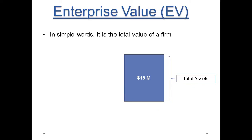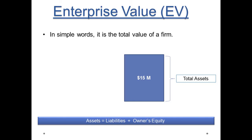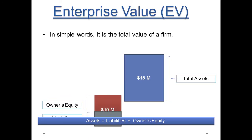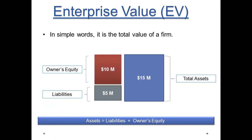We know a simple accounting equation: assets equals liabilities plus owner's equity. Assets such as land, building, plant and machinery are the application of funds. And liabilities such as debt, preferred stock, plus owner's equity are the sources of funds used to finance these assets. So, looking at this equation, we can calculate the total value of a firm either from the asset or the liability side.